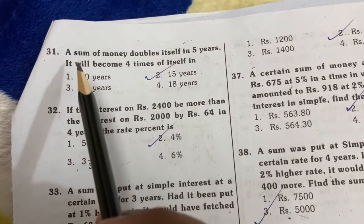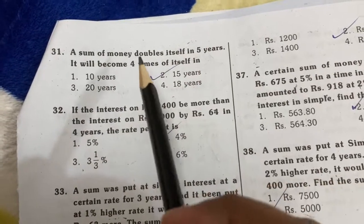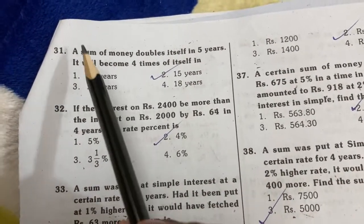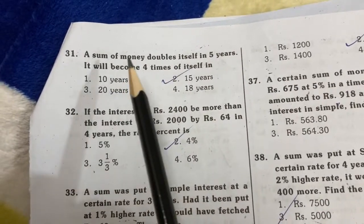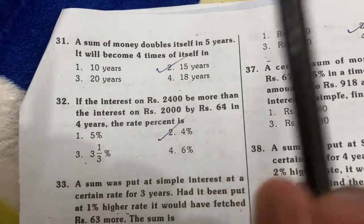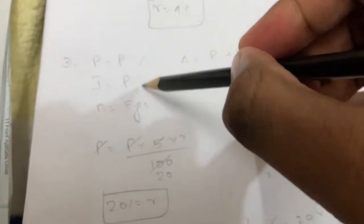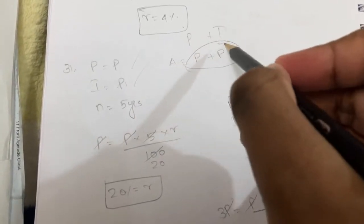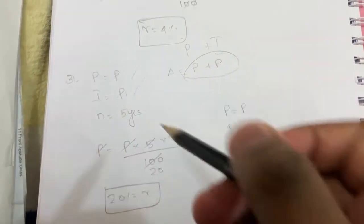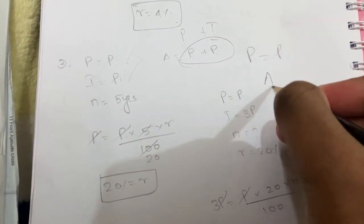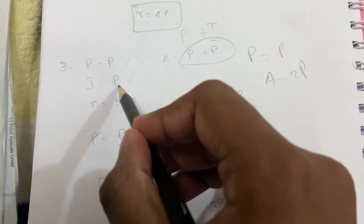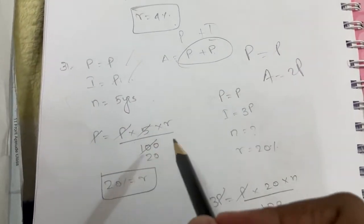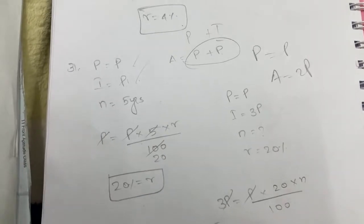A sum of money doubles itself in five years — it will become four times in some time. So the principle becomes two times, meaning A is equal to P plus interest, so A equals 2P. The interest equals P. Using SI formula: P equals P into 5 into R divided by 100, so R equals 20%.